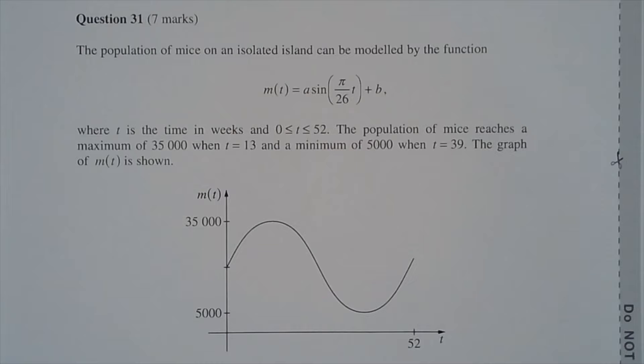Question 31. The population of mice on an isolated island can be modeled by the function m(t) equals a sine pi over 26t plus b, where t is the time in weeks and 0 ≤ t ≤ 52. The population reaches a maximum of 35,000 when t equals 13 and a minimum of 5,000 when t equals 39. The graph of m(t) is shown.